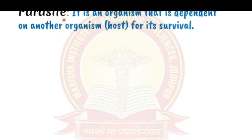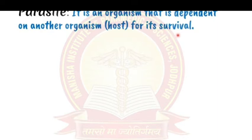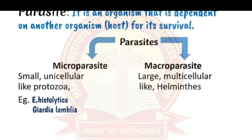A parasite is an organism that depends upon another organism — called the host — for its survival. In most cases, the host is a human being. Parasites are divided into two types: microparasites and macroparasites.